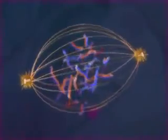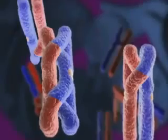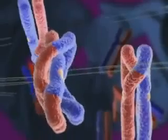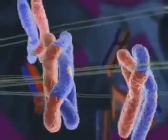After the spindle forms and the nuclear envelope breaks down, microtubules from opposite poles attach to each chromosome of the homologous pair, resulting in a tug of war.